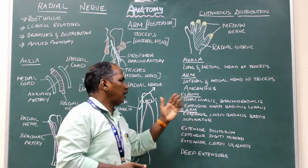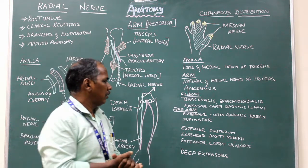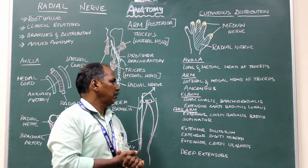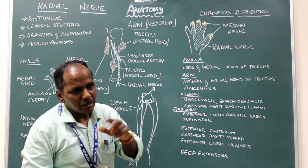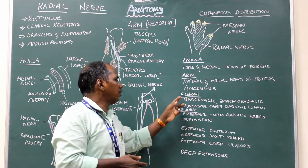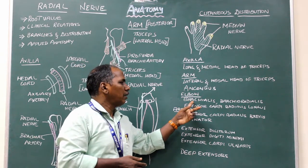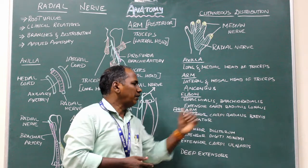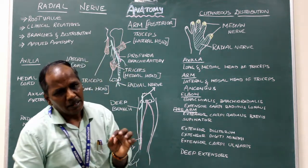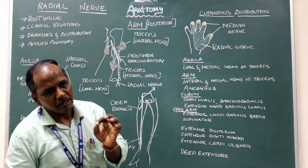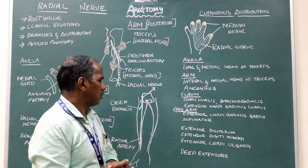At the elbow, just before dividing into the superficial and deep branches, it gives muscular branches to brachialis, brachioradialis, and extensor carpi radialis longus.